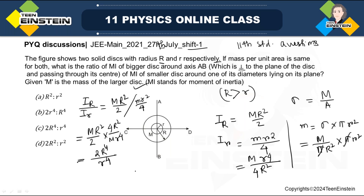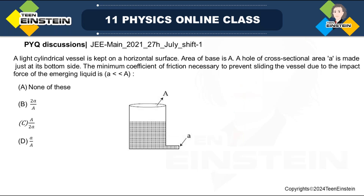Taking the ratio of the bigger disk's MI to the smaller disk's MI, we get 2R⁴ / r⁴. So the ratio is 2R⁴ : r⁴. Checking the answer options, option C is the correct answer. This was a straightforward question requiring knowledge of disk MI formulas about its own axis and diameter.